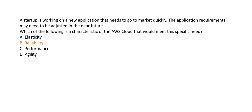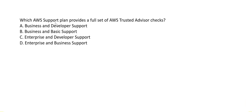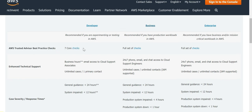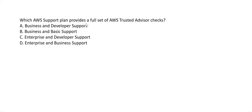Which AWS support plan provides a full set of AWS Trusted Advisor checks? The Developer plan has only seven core checks. Both Business and Enterprise support plans provide the full set of Trusted Advisor checks. Hence both Business and Enterprise are the correct options.